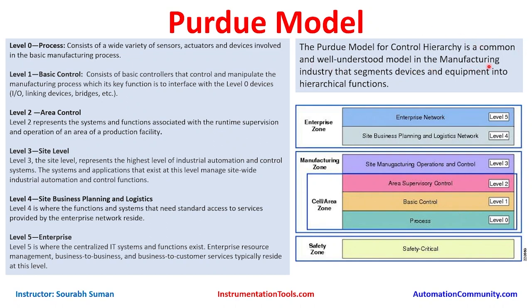The Purdue model for control hierarchy is a common and well-understood model in the manufacturing industry that segments devices and equipment into hierarchical functions. It goes from level 0 to level 5, though there are also intermediate levels like 3.5 or 3.75. It's quite flexible nowadays — OEMs, service providers, and system integrators are also tweaking these models, but the initial model ran from level 0 to 5.